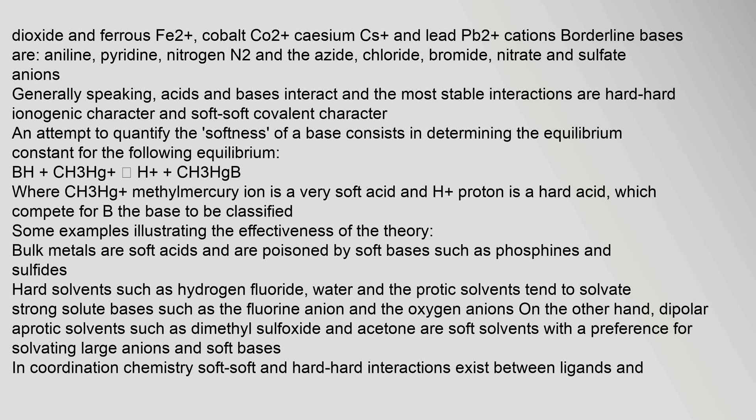Generally speaking, acids and bases interact, and the most stable interactions are hard-hard (ionogenic character) and soft-soft (covalent character). An attempt to quantify the softness of a base consists in determining the equilibrium constant for the equilibrium: B + CH₃Hg⁺ ⇌ CH₃HgB⁺, where CH₃Hg⁺ (methylmercury ion) is a very soft acid and H⁺ (proton) is a hard acid, which compete for B, the base to be classified.